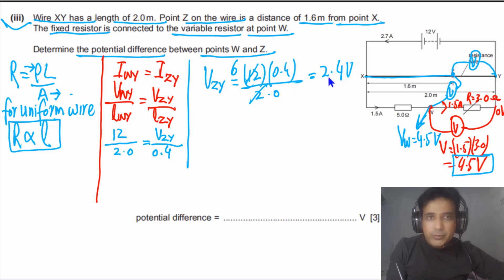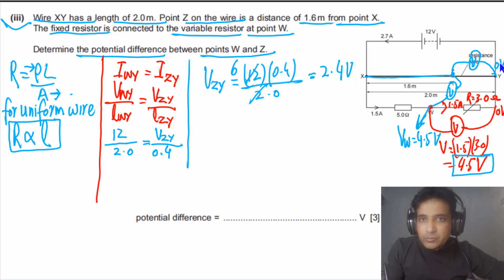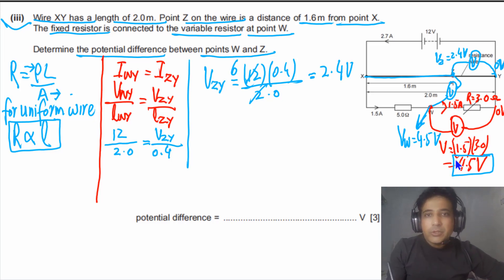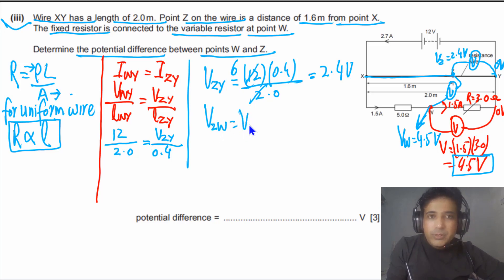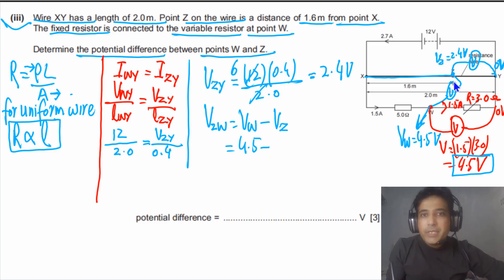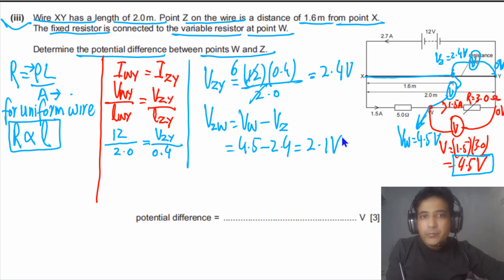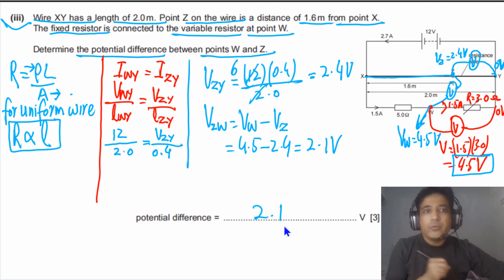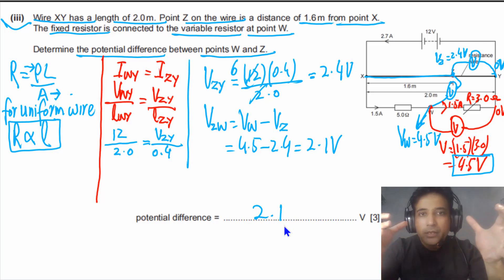Now we find the difference between point W and point Z: V_W − V_Z = 4.5 − 2.4 = 2.1 volts. So the potential difference between points W and Z is 2.1 volts. A beautiful conceptual question — you need to understand how to answer in a systematic way to improve your understanding of electricity.